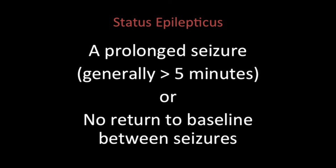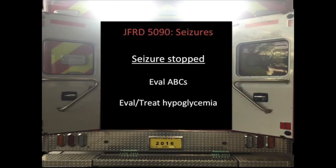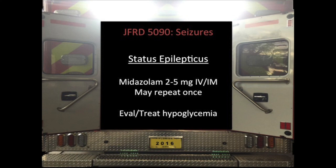It helps when you come in and say they've been seizing the entire time, or they've had five seizures and in between each one they're not waking up — that's concerning to us. Per your protocols, if the seizure has stopped, evaluate ABCs and evaluate and treat hypoglycemia — a reason for seizure is hypoglycemia. For status epilepticus, first line is midazolam, 2 to 5 milligrams IV or IM, may repeat once. That's our go-to drug now — it used to be more Ativan, but midazolam has better outcomes.